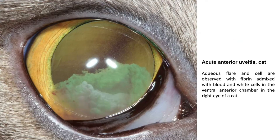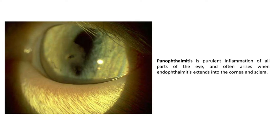This is another picture of acute anterior uveitis in a cat - aqueous flare and cells are observed with fibrin mixed with blood and white cells in the ventral anterior chamber of the right eye. This is panophthalmitis, a purulent inflammation of all parts of the eye, which often arises when endophthalmitis extends into the cornea and sclera.